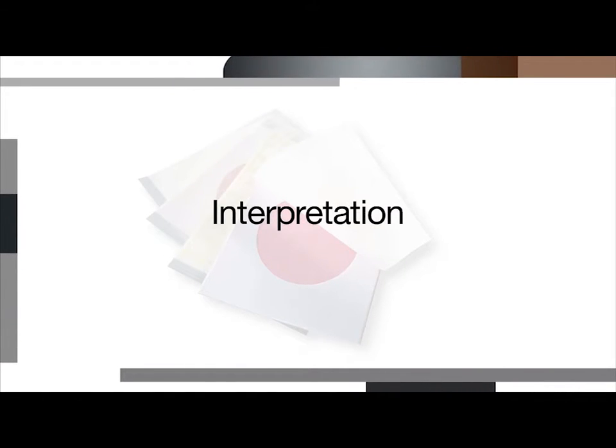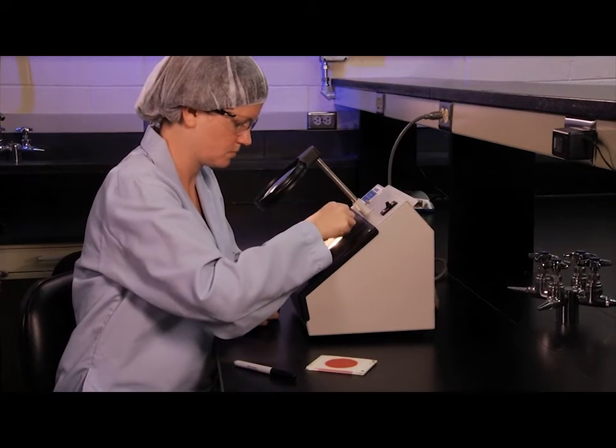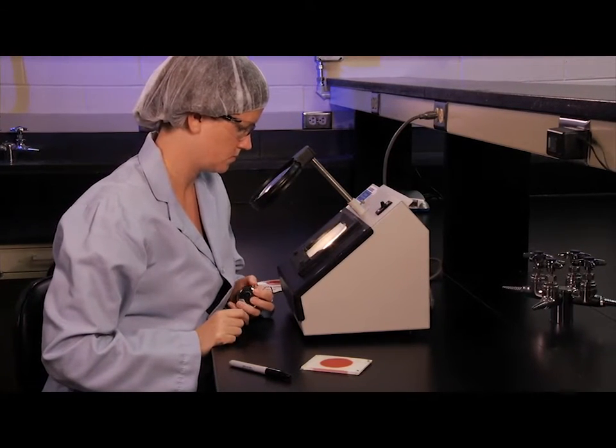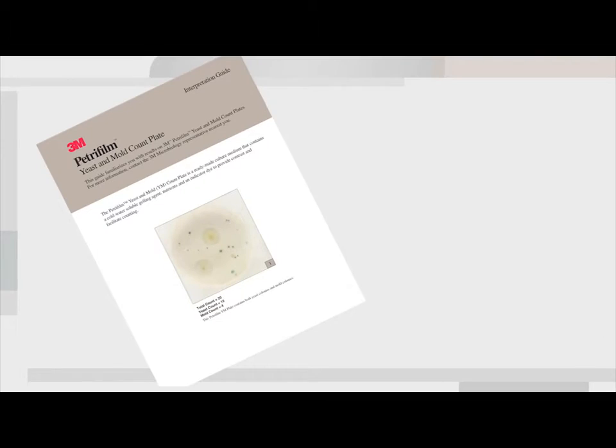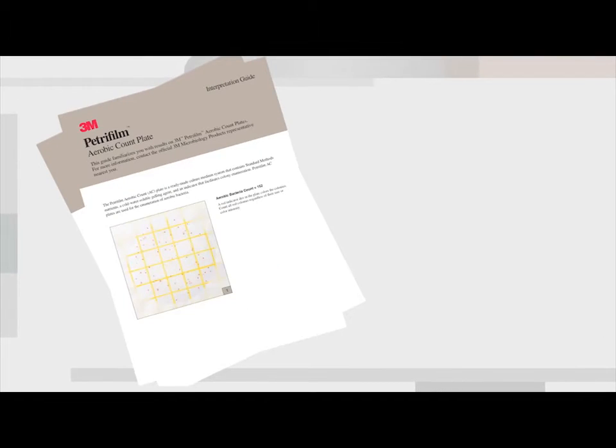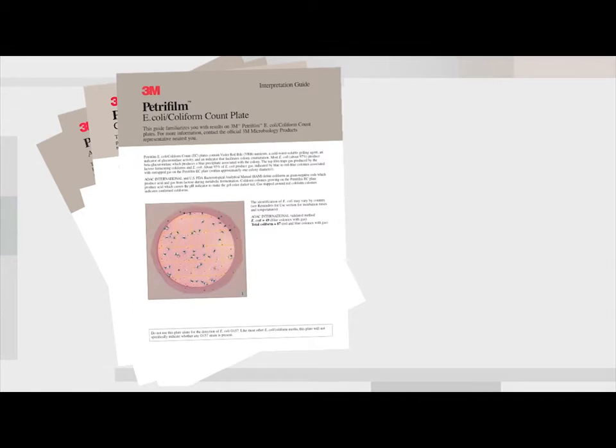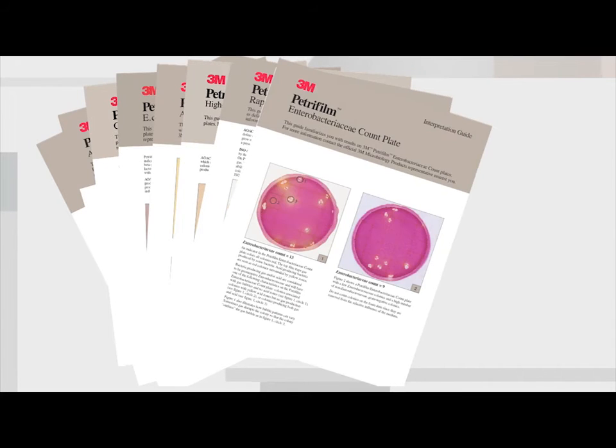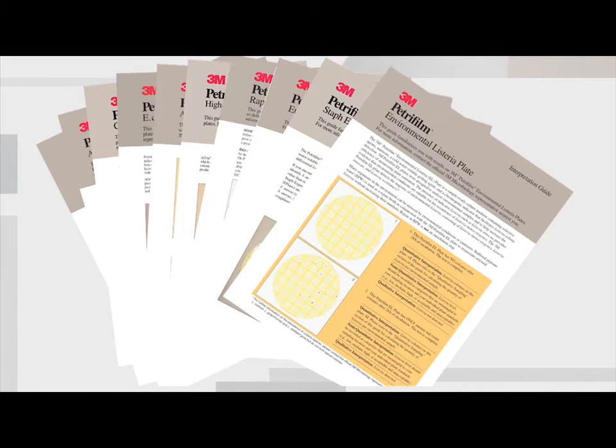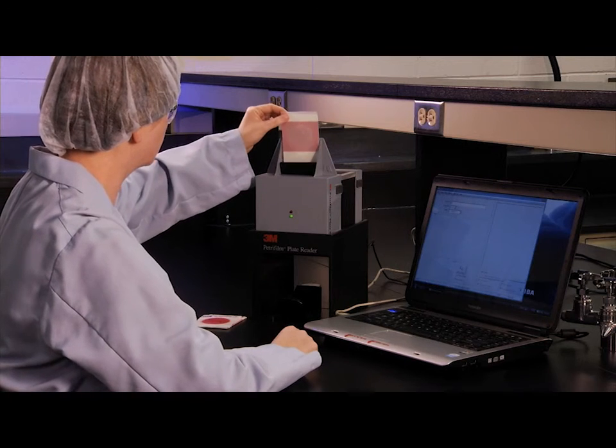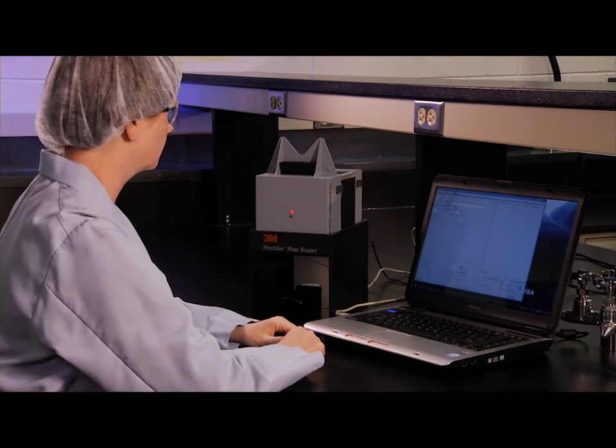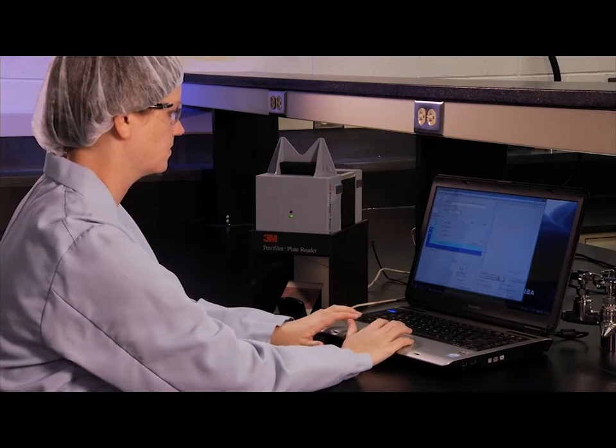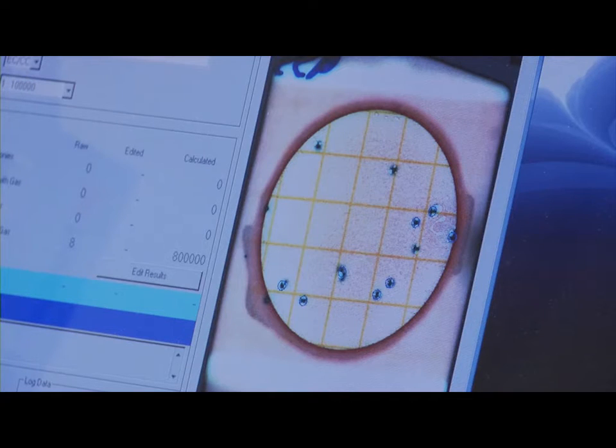Good lighting is necessary for accurate counting. An illuminated magnifier and a hand tally may help for counting bacterial colonies. As mentioned earlier, 3M Food Safety provides an interpretation guide for each type of 3M Petrifilm plate to assist you in reading any type of 3M Petrifilm plates. 3M Food Safety also offers an automated 3M Petrifilm plate reader which enables more consistency and reliability in your counting and data management.